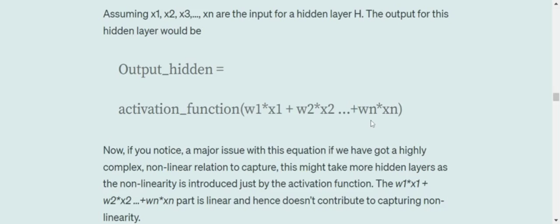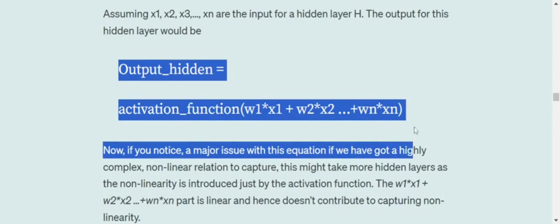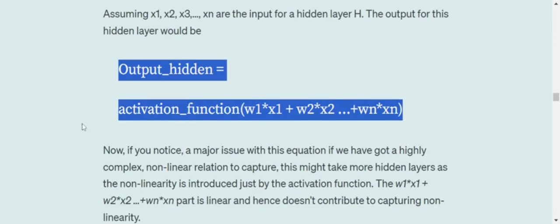W1, W2, Wn are the weights, weight metrics that we train. We add them together and then eventually apply an activation function. So the process looks something like this. We have scalar weight values that we multiply with each of the input. We add them together and then apply some activation function, which can be sigmoid, ReLU, etc.